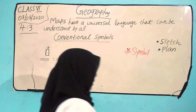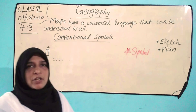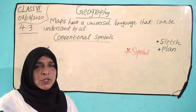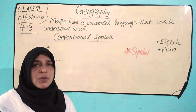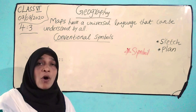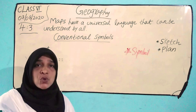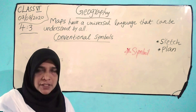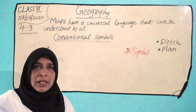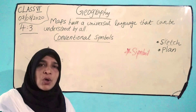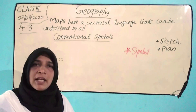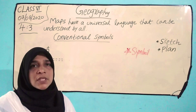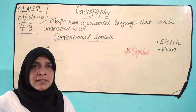It is the third component of a map. It is not possible to draw on the map with the actual size and shape of such features such as buildings, roads, trees, railway lines, etc. Then we use some symbols.